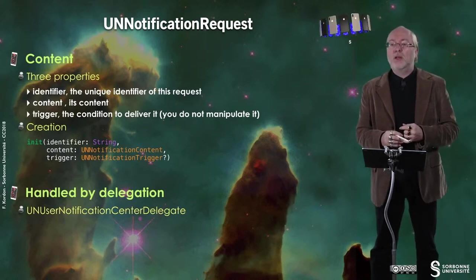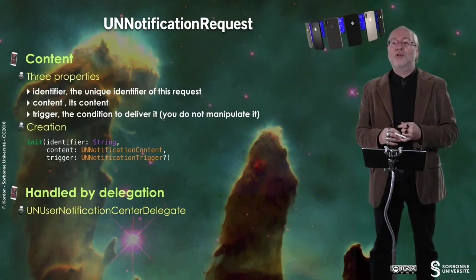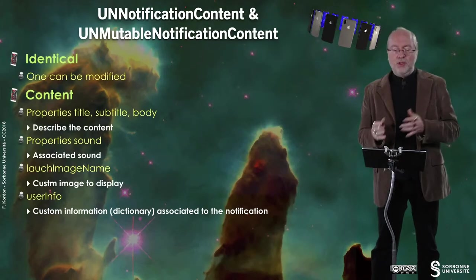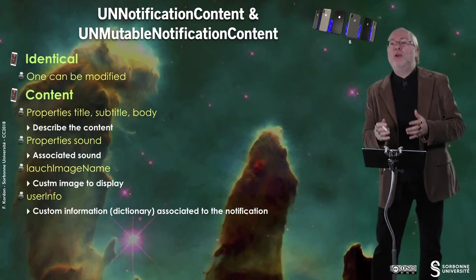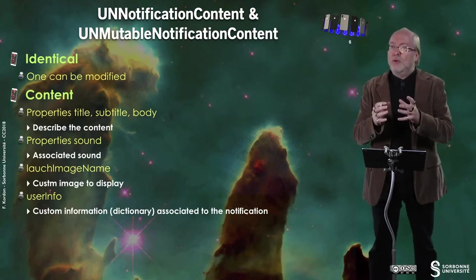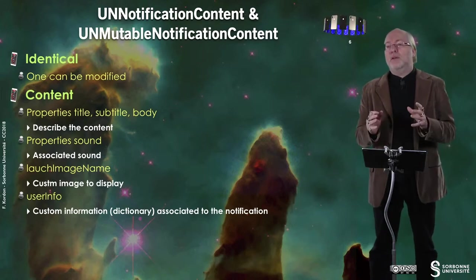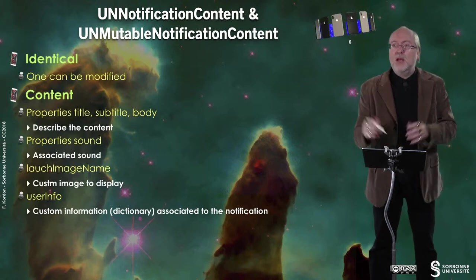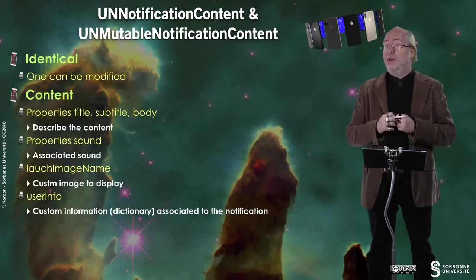You have in fact two classes: UN Notification Content and UN Mutable Notification Content. This is the content of a request. They are identical but as you can imagine, one can be modified — the mutable one — while in the other you just have getters. So when you receive such an event and retrieve it, it's a UN Notification Content. When you create one, it's a UN Mutable Notification Content.